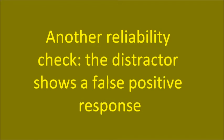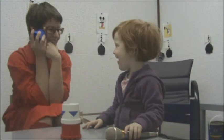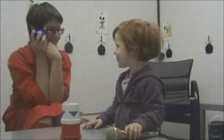You see the distractor takes orders from Jetska — just another game to keep the attention of Jetska ongoing. To check whether Jetska reacts reliably, the distractor shows a false positive reaction. Jetska doesn't agree and also demonstrates the reliability check brilliantly.